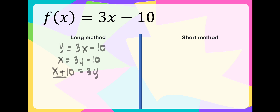And to get the value of y, let us divide both sides by 3. So y is equal to x plus 10 over 3. This is the inverse for the long method.